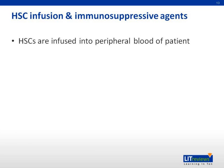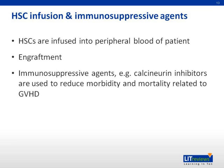The hematopoietic stem cells are infused into the patient as per other blood products under monitoring. Engraftment — which is when the donor cells start to grow and blood counts recover — depends on the source of the stem cells. Immunosuppressive agents are started just before the infusion of stem cells and continued usually for about six months to a year, and may be longer depending on the presence of chronic graft-versus-host disease.